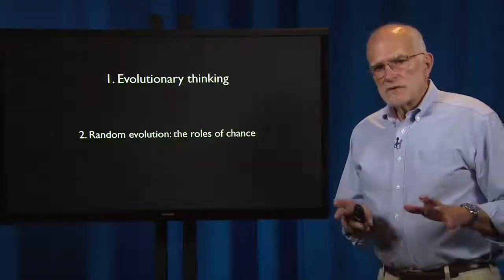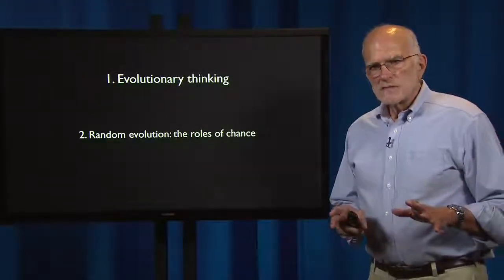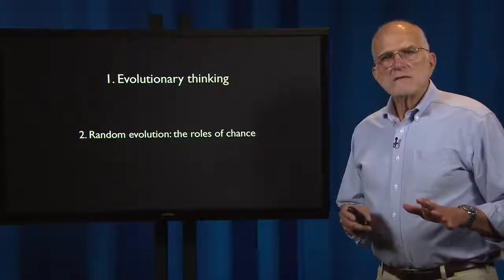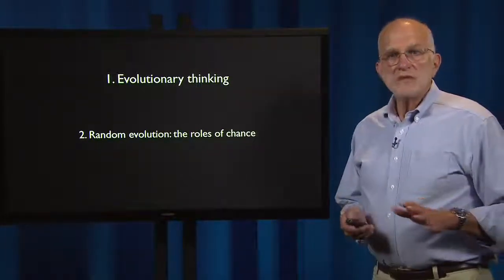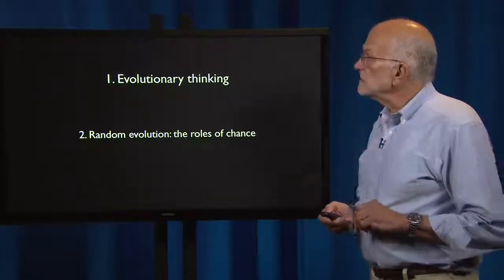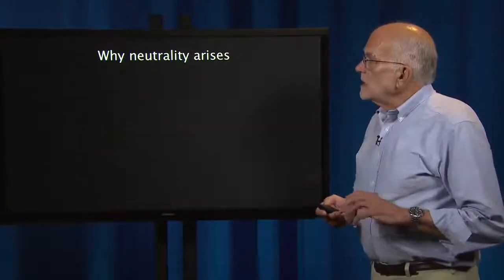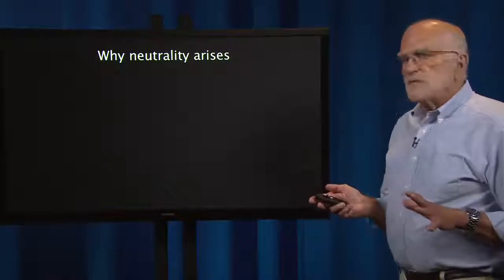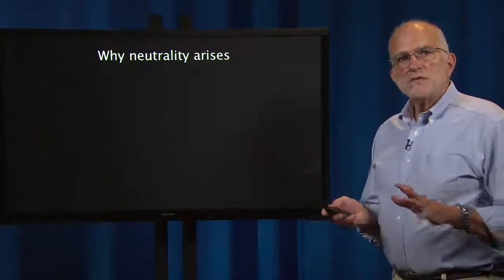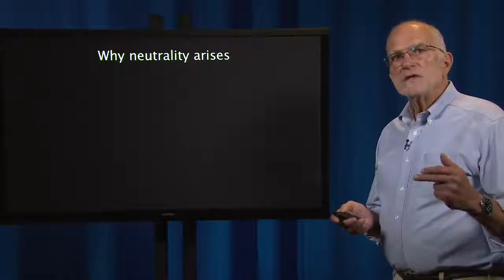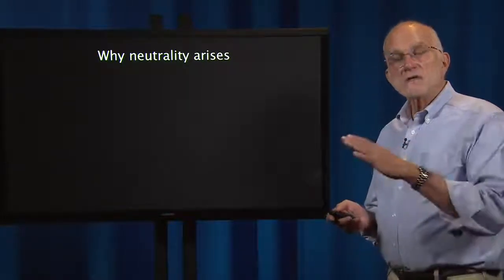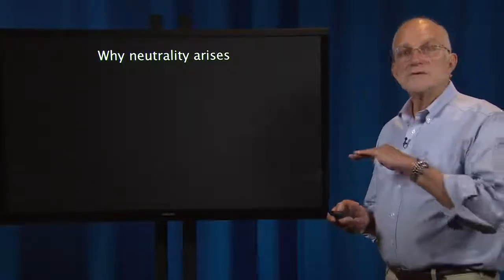The second major concept in evolutionary thinking is randomness — the role of chance in evolutionary events. Random things are also referred to as neutral processes. Neutrality means selection is not operating: things are neither being selected nor not selected; they're just neutral.